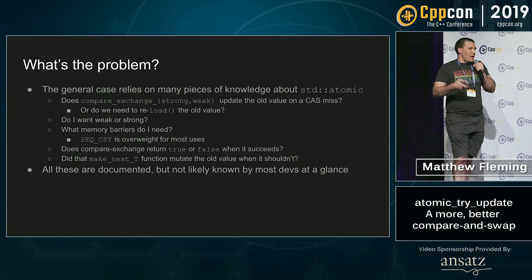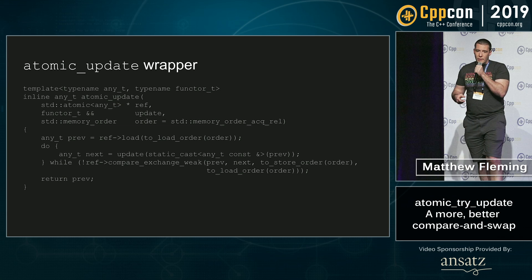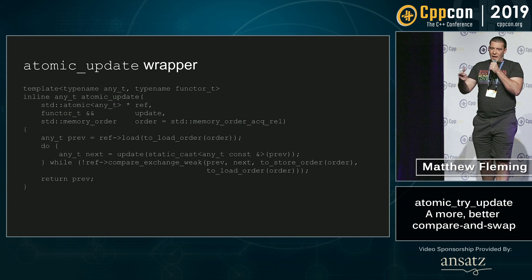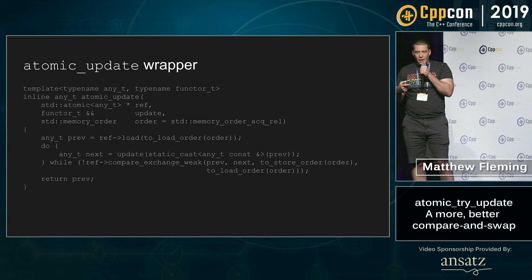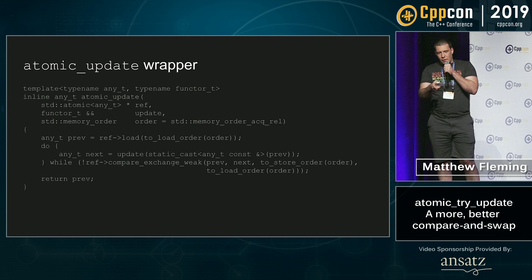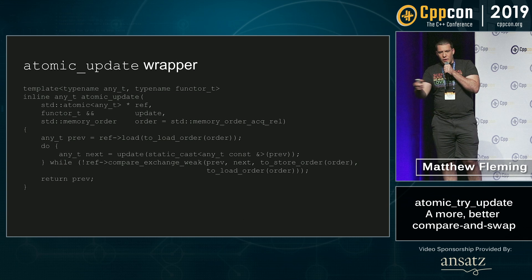Here's one wrapper you can use that essentially replaces that do-while loop with a single function call, and you pass it a lambda. You pass it a functor to update and it does all the work for you. There's this interesting two-store-order and two-load-order. I had fun times trying to get this to work when I just passed the order into compare_exchange_weak — my version of Clang said no, this is not a valid argument — so I had to use the four-argument version instead of the three-argument version.